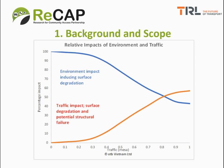This slide shows a schematic representation of the impact of various environmental aspects as well as traffic on the long-term performance of low-volume roads. When traffic levels are low, damage mostly occurs due to environmental factors. As traffic levels rise, the contribution of the environment drops to about 40% and the rest is contributed by traffic.